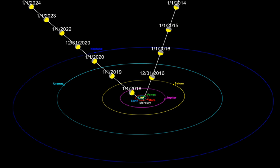It is possible for objects orbiting a star to be ejected due to interaction with a third massive body, thereby becoming interstellar objects. Such a process was initiated in the early 1980s when C/1980 E1, initially gravitationally bound to the Sun, passed near Jupiter and was accelerated sufficiently to reach escape velocity from the solar system. This changed its orbit from elliptical to hyperbolic, with an eccentricity of 1.057.